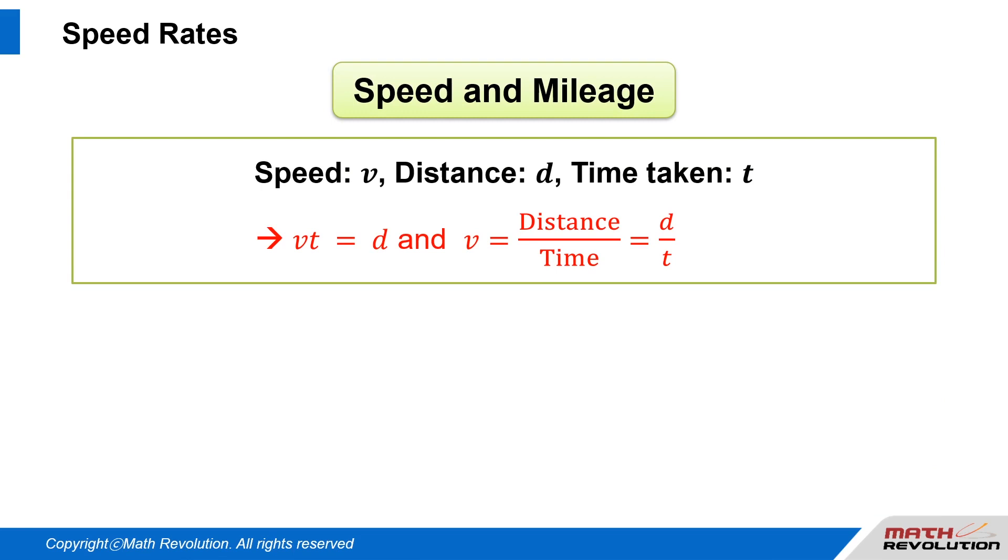Speed and Mileage. Speed Rate: Let the speed be v, and the time taken to travel distance d be t. Then v times t equals d. Formulaically, speed v equals distance over time, which equals d over t.